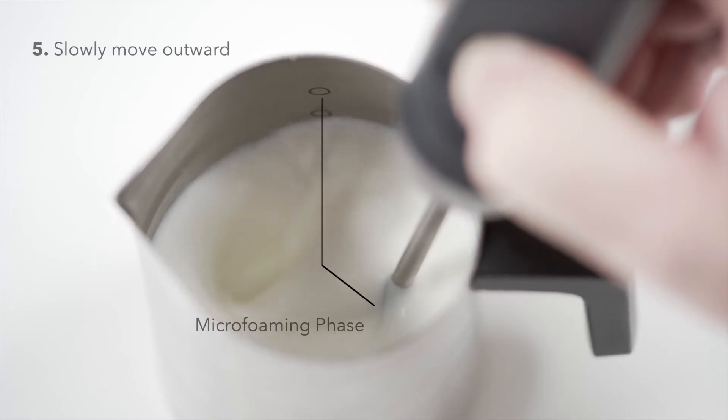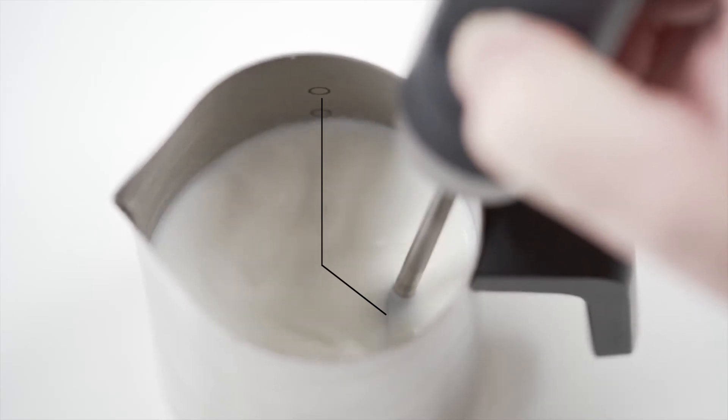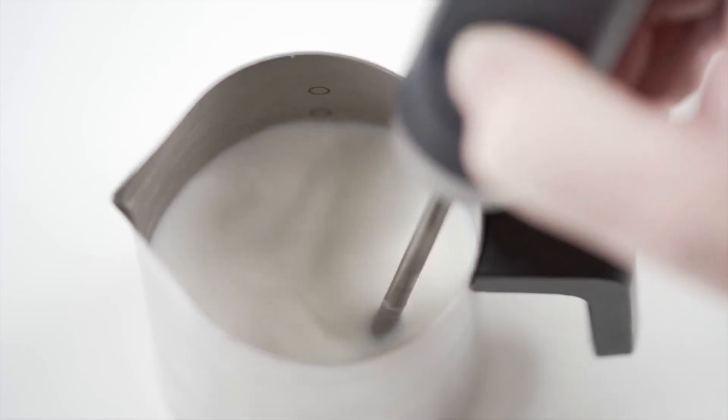Gradually move towards the edge, but try to keep a visible vortex in the center. You will hear a change in sound as air is no longer being incorporated. The bubbles are now getting turned into microfoam. The sound will gradually disappear as the microfoam becomes ultra-smooth.